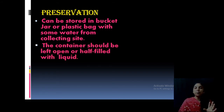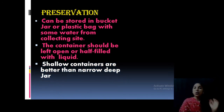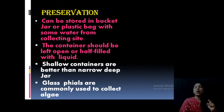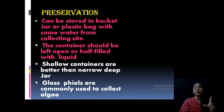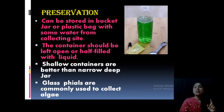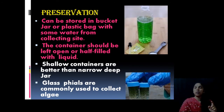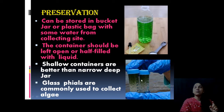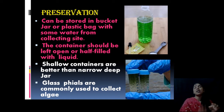The container should be left open or half filled with liquid. Shallow containers are better than narrow deep containers, so we usually prefer shallow containers. Another very important method is glass files — glass bottles or glass tube-like structures used for collecting algae. This is a very common method and very handy and easy for us to arrange in our laboratory.